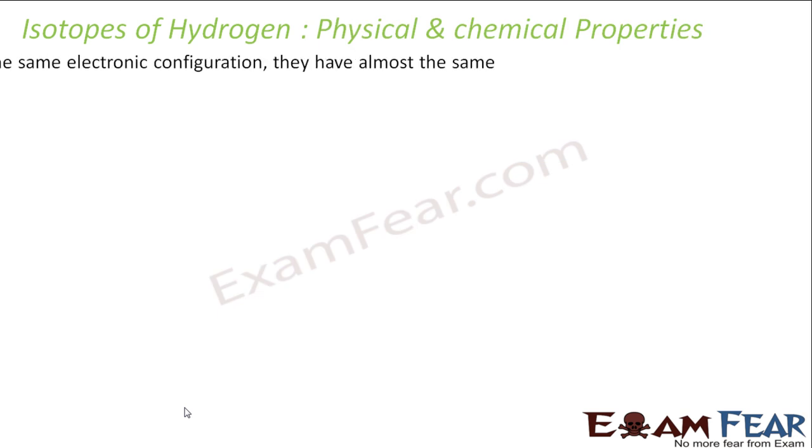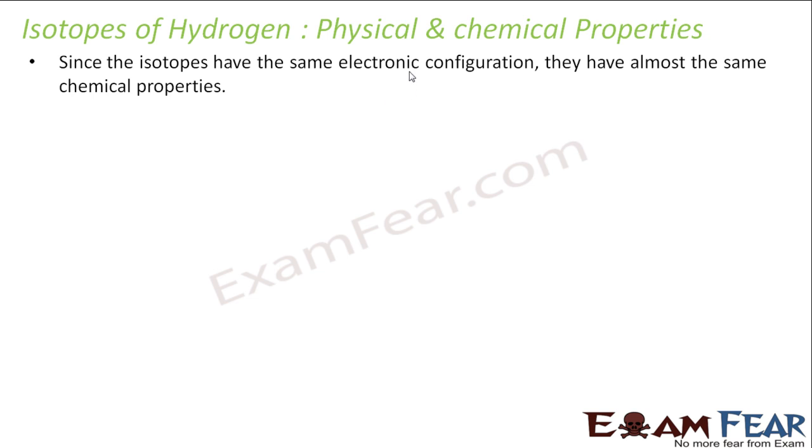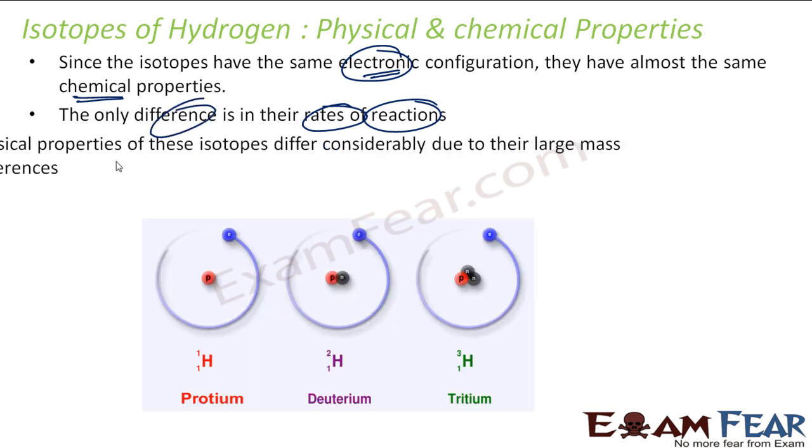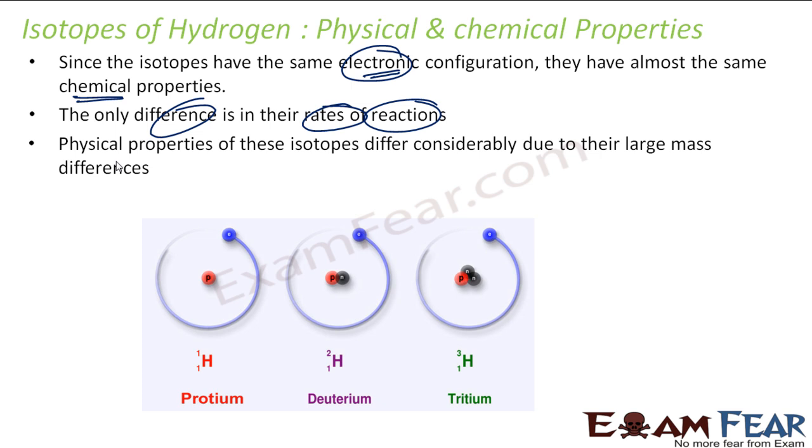And if you talk about the physical and chemical properties: since the isotopes have the same electronic configuration, as we explained in the atom chapter, the chemical properties depend on the electronic configuration. They have the same number of electrons, so they have the same electronic configuration. They have almost similar chemical properties. The rate of reaction will differ. And the physical properties - if you see, we talk about the melting and the boiling point - they differ slightly because there is a huge mass difference.